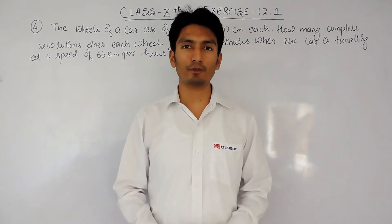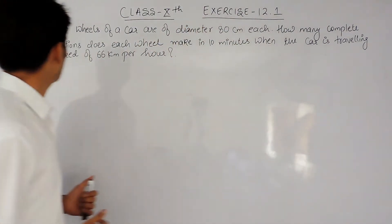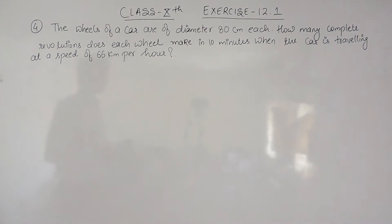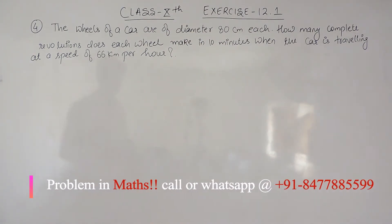Hello everyone, we are from True Maths and in this video we are going to solve question number 4 of exercise 12.1. The question says: the wheels of a car are of diameter 80 cm each. How many complete revolutions does each wheel make in 10 minutes when the car is travelling at a speed of 66 km per hour?